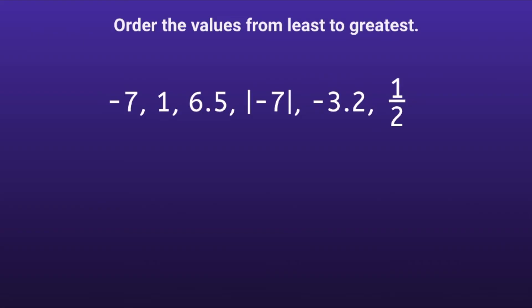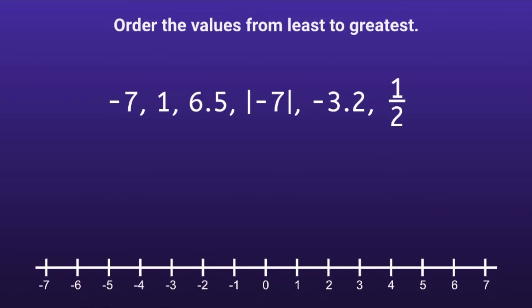Order the values from least to greatest. In order to do this, we're going to need a number line. It's important for us to know that the values on the left of the number line have less value, and the numbers on the right side of the number line have greater value. This will help us to put the numbers in order from least to greatest.